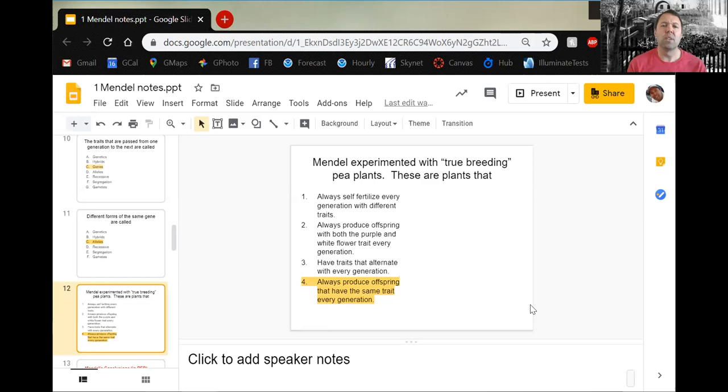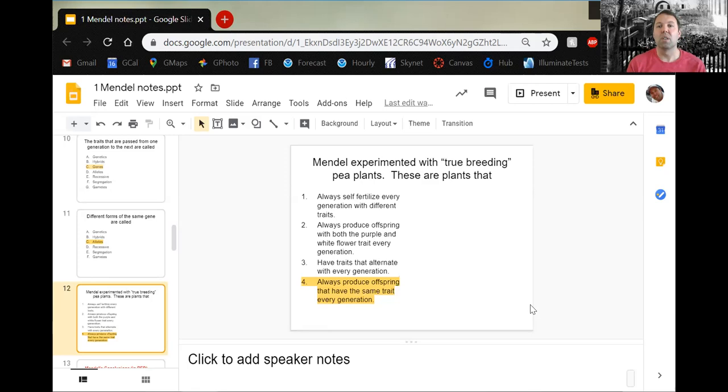Mendel experimented with true breeding pea plants. What does true breeding mean? This means that whatever color you have would always produce children with that same color of flower. If you had a tall plant that always produced tall plants as children, that would be called true breeding. Similarly for short - it doesn't have to be dominant. Short plants would also be true breeding if they had two recessive alleles for short.